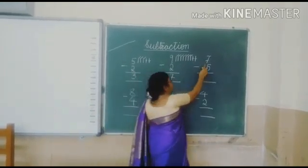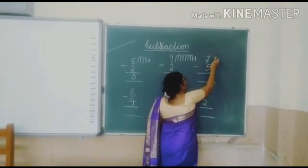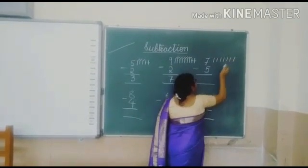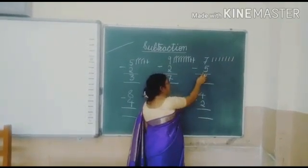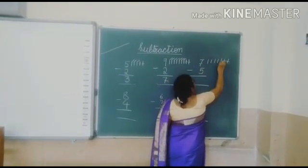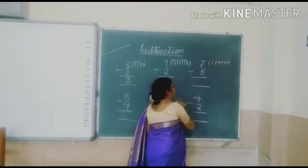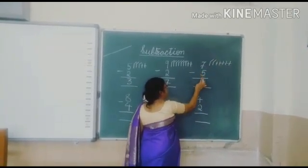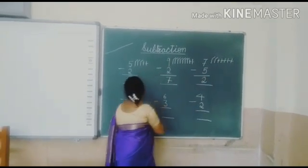Next, this is number 7. Draw line 1, 2, 3, 4, 5, 6, 7. This is 5. So you have to cut 5 lines. 1, 2, 3, 4, 5. How many left? 1, 2. So 7 minus 5 is 2.